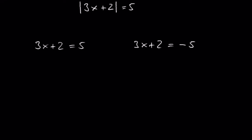Let's look at an example where the absolute value contains more than one term: the absolute value of 3x plus 2 equals 5. The expression between the absolute value bars is 5 or negative 5, so we write two separate equations: 3x plus 2 equals 5, or 3x plus 2 equals negative 5. After subtracting 2 and dividing by 3 on both sides, we get x equals 1, and for the second equation, x equals negative 7 thirds.